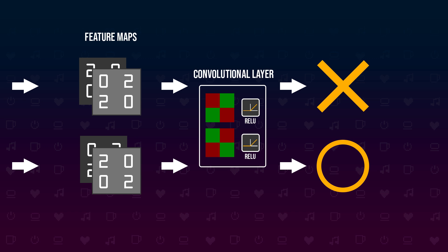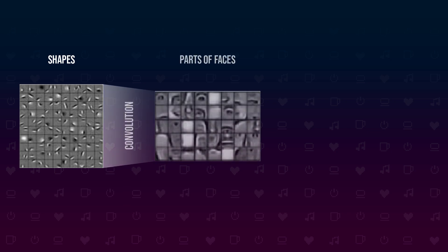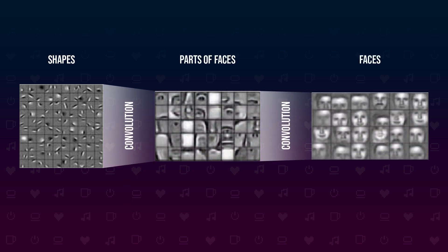All of these are trainable parameters and the neural network figures them out on its own during training — that is the magic of machine learning. Modern convolutional networks indeed utilize many stacked convolution layers to progress from pixels to shapes to parts of a face and finally to faces. This is how a neural network can see and extract concepts from an image, which we then can feed as a feature map to our neural network brain to do whatever it wants with it.